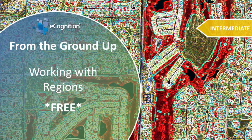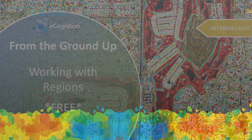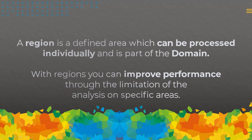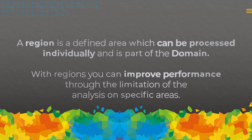Welcome to this 'From the Ground Up' tutorial on regions. In eCognition, a region is more or less a subset that you can define within a rule set — a defined area which you can then process individually. You can have multiple regions, they are stored in a variable, and they are part of the domain, which means you can use the region in the domain definition and focus processing on that region.